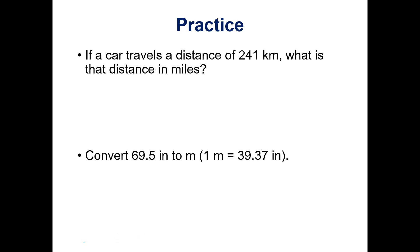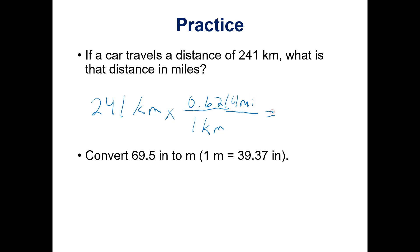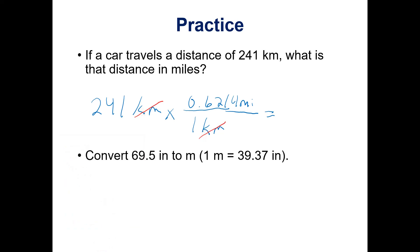Let's take an example — a car travels a distance of 241 kilometers and we want to know that distance in miles. We start with 241 kilometers. We know that one kilometer is 0.6214 miles, so we put kilometers on the bottom of the next step and miles on top, so that kilometers cancels with kilometers and we're left with miles at the end.